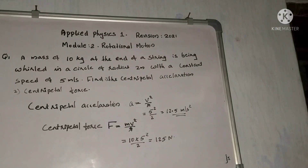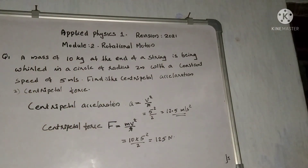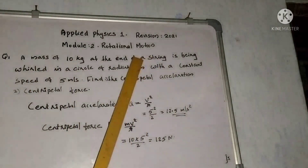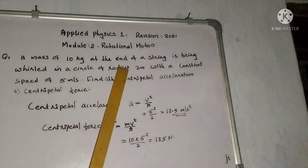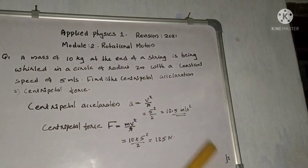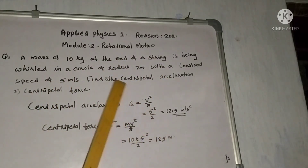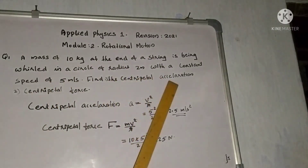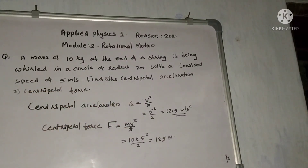First problem: a mass of 10 kg at the end of a string is being whirled in a circle of radius 2 m with a constant speed of 5 m per second. Find the centripetal acceleration and centripetal force.